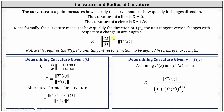Recall the curvature at a point measures how sharply the curve bends or how quickly it changes direction, which means the more sharply a curve bends and the more quickly it changes direction, the larger the value of the curvature. The curvature of a line is zero. The curvature of a circle is one divided by the radius of the circle, and the curvature is equal to the reciprocal of the value of the radius of the circle of curvature.